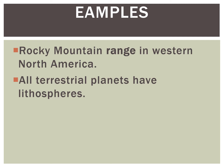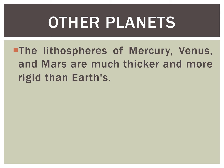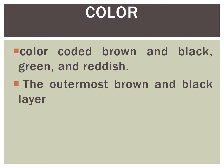For example, the Rocky Mountain range in Western North America. Students, you must remember that if a planet has land, it must have a lithosphere because land is made up of lithosphere — whether it is Earth or another planet. If we see the lithosphere of Mercury, Venus, and Mars, it is much thicker and more rigid than the lithosphere of Earth. If we see the color of the lithosphere, there is quite a variation: the color can be brown, black, green, or reddish. The outermost layer of the lithosphere is more likely brown or black.